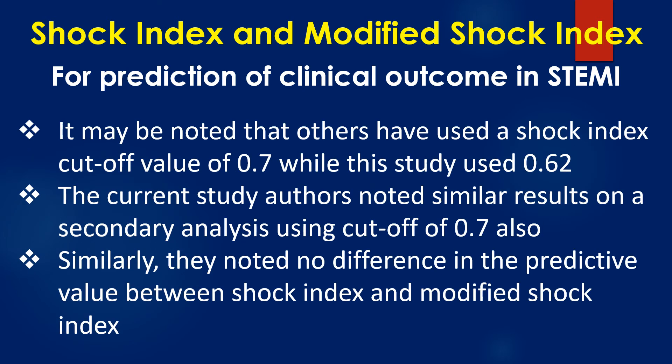It may be noted that others have used a shock index cutoff value of 0.7, while this study used 0.62. The current study authors noted similar results on a secondary analysis using a cutoff of 0.7 also. Similarly, they noted no difference in the predictive value between shock index and modified shock index.